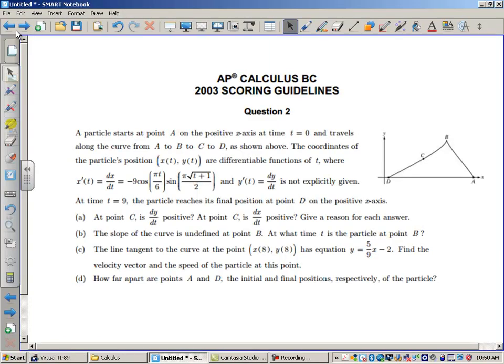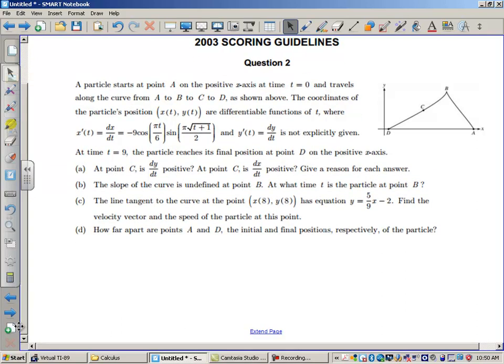Let's get after a couple of free response questions now with parametrics. And what I'm going to do here is I'm not going to work all of these out. I'm just going to ask some questions. And that's what I want you to come to class with tomorrow. I want you to have these questions down so that you guys can work together on this. So off we go. We've got a particle that's starting at point A on the positive x-axis. So it's starting here. And it travels along the curve from A to B to C to D. So I'm putting little arrows on here to show the movement of the particle. So I guess it takes 9 seconds, 9 minutes, whatever, to get from A to B to C to D.